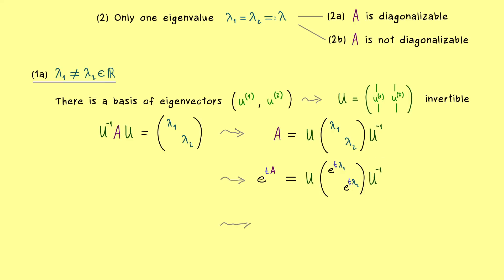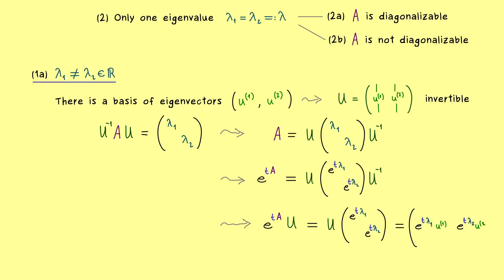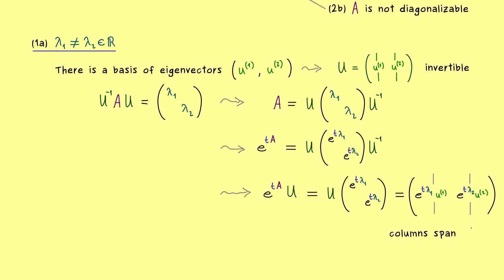To avoid computing U-inverse, we bring it to the left-hand side. On the left we have e to the power tA times matrix U, and as mentioned earlier, the columns of this matrix also span the whole solution space. The right-hand side is easy to calculate: the first column is e to the power t-lambda1 times u1, and the second column is e to the power t-lambda2 times u2. These two columns span the whole solution set — each is a solution, and every linear combination is also a solution. Case 1A is done.